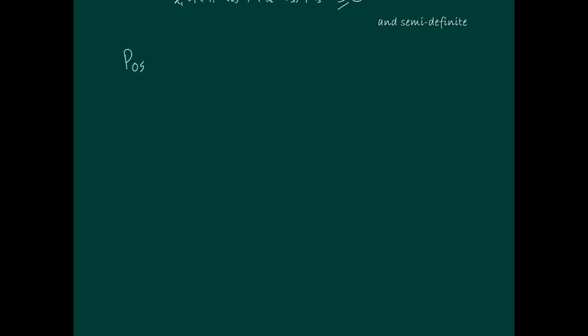So why is it so cool to be a positive definite matrix? A positive definite matrix A has the following properties. Number one, A is non-singular, guaranteed non-singular, so its inverse exists.